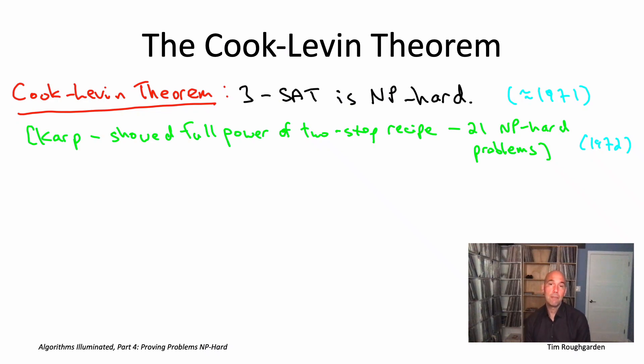Karp's original list of 21 NP-hard problems, which includes many of the ones we'll be discussing in this chapter, really made it clear that NP-hardness was the fundamental obstacle preventing progress in all kinds of different fields on lots of different famous problems, like the traveling salesman problem. Cook and Karp both received the ACM Turing Award in 1982 and 85, respectively.